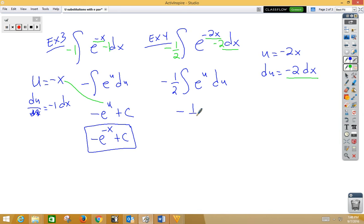Well, that's negative 1 half e to the u plus c. But it's not really e to the u, it's negative 1 half e, u is negative 2x plus c. You could, of course, rewrite that as negative e to the negative 2x over 2 plus c. So be prepared for that.